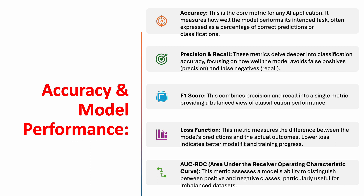AUC-ROC — the area under the receiver operating characteristic curve — assesses a model's ability to distinguish between positive and negative classes, and is particularly useful for imbalanced datasets.